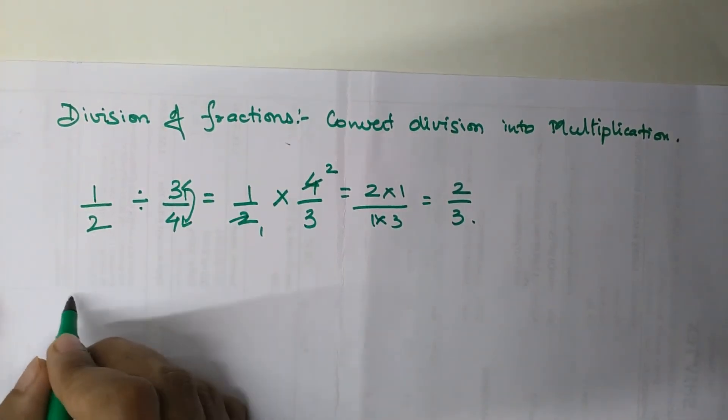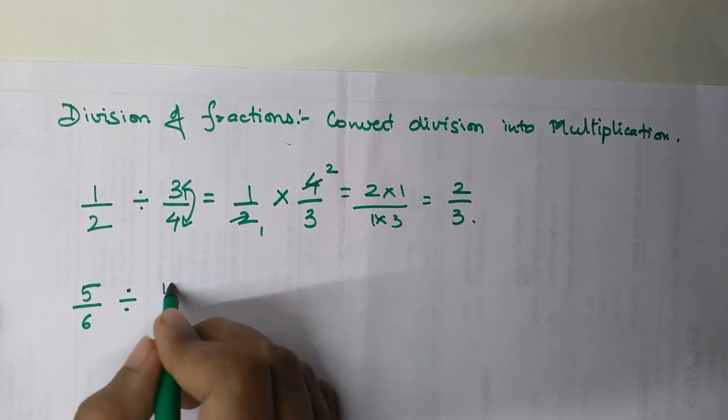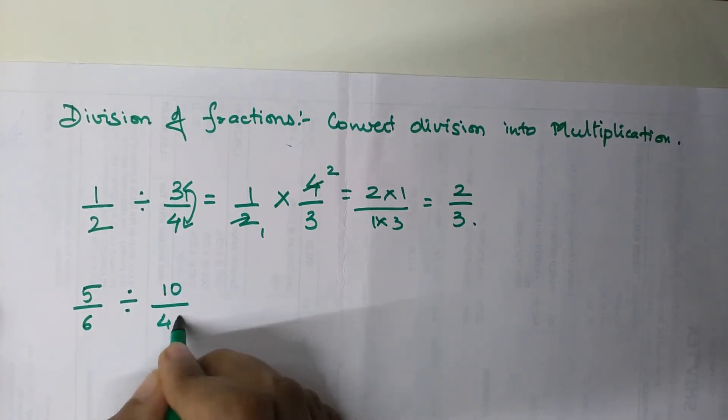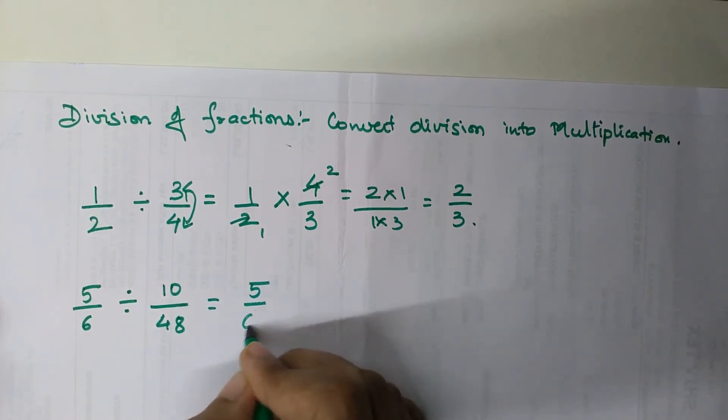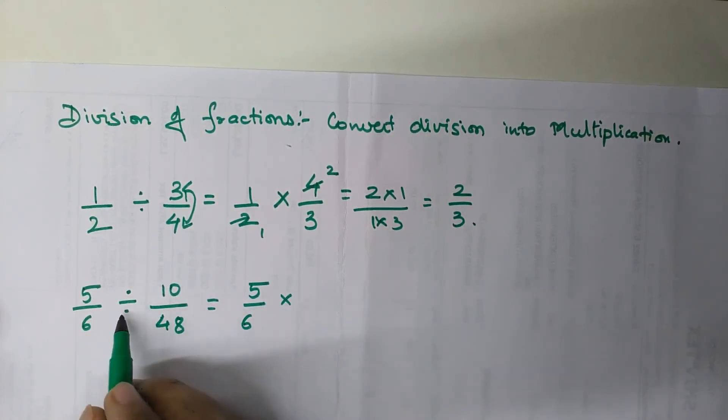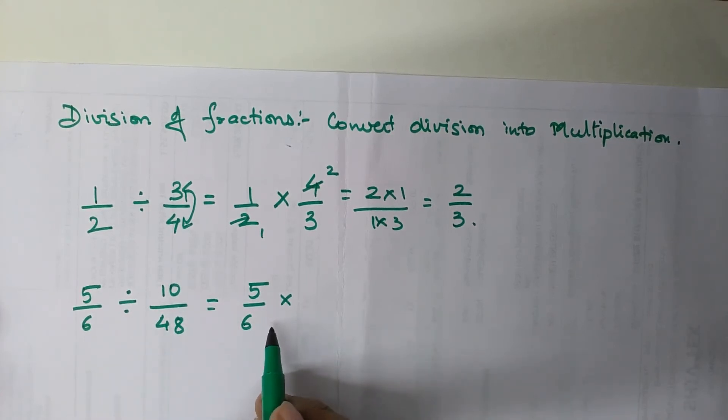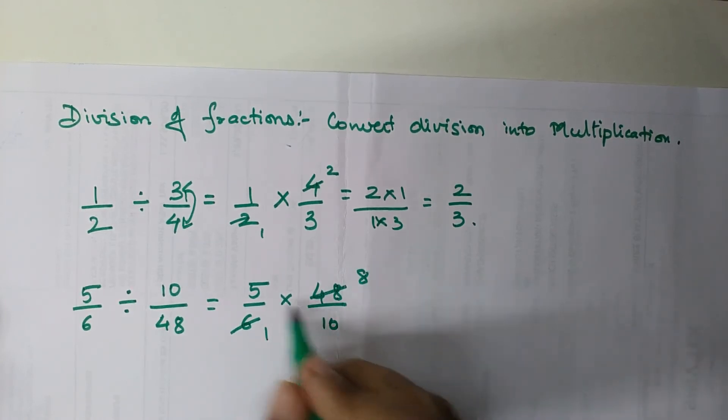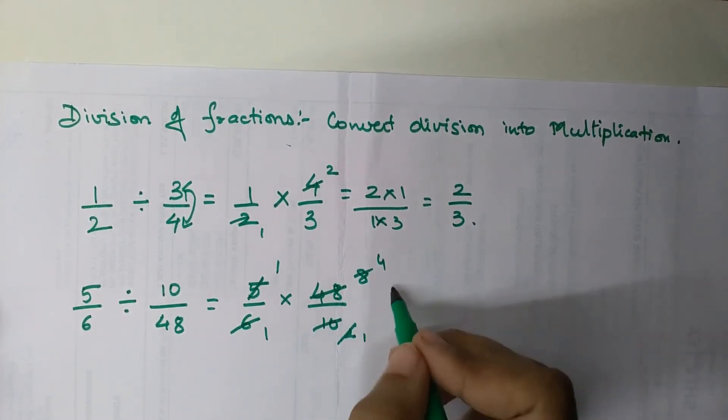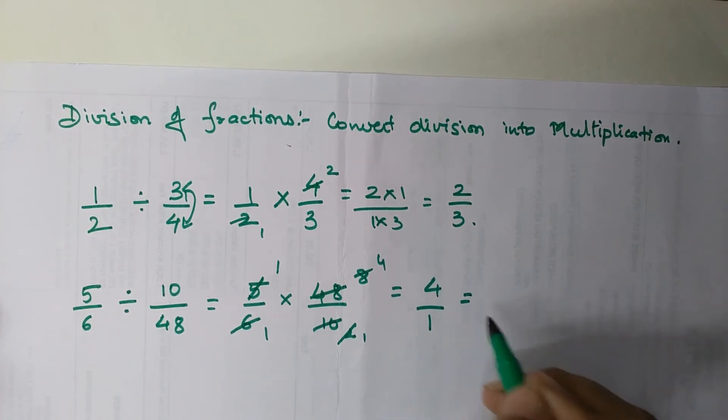Let's look at another example: 5/6 divided by 10/48. We write the first fraction as it is, change the division to multiplication, and take the reciprocal, which is 48/10. With cancellation, 6 goes into 48 eight times, 5 goes into 10 twice, and 2 goes into 8 four times. Your final answer is 4.